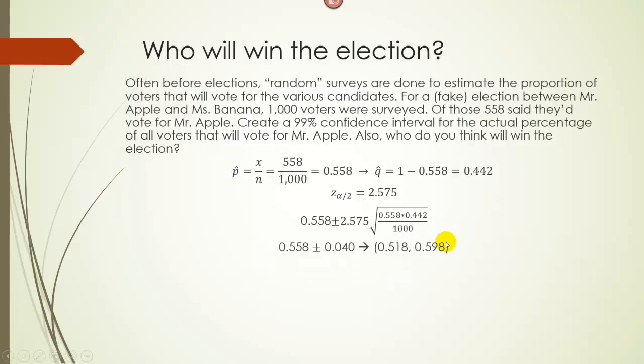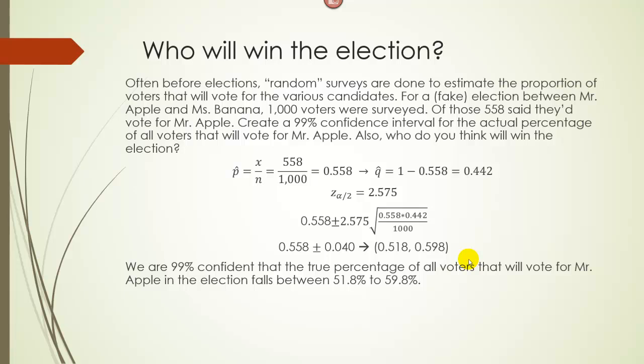Then multiply by 2.575. All of this has to be under the square root. When we do that, we get approximately 0.040 for our margin of error. When we add and subtract that from 0.558, we get 0.518 to 0.598. In other words, we are 99% confident that the true percentage of all voters that will vote for Mr. Apple in the election falls between 51.8% to 59.8%.